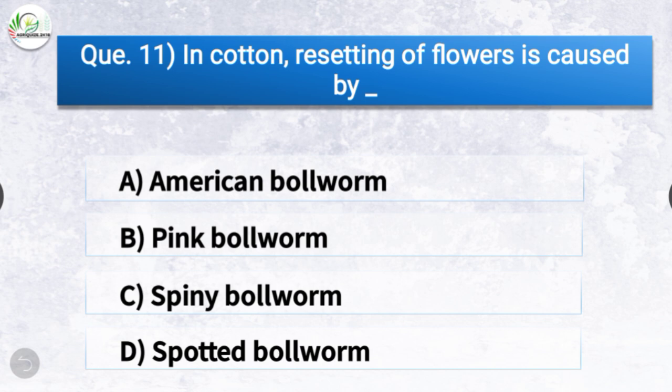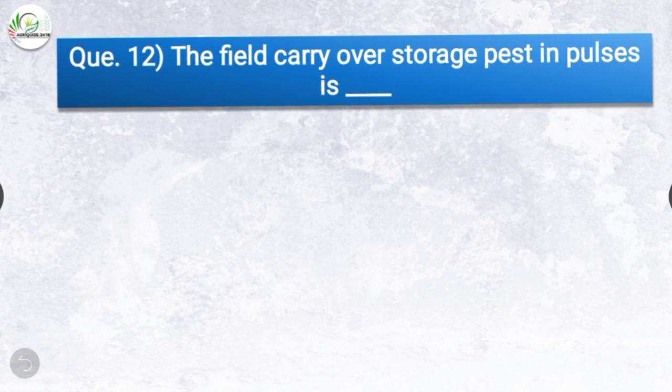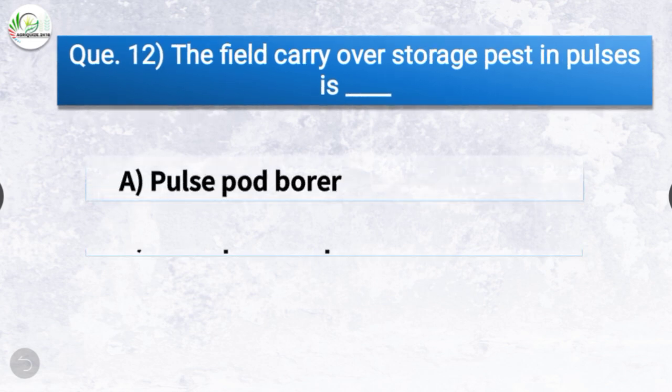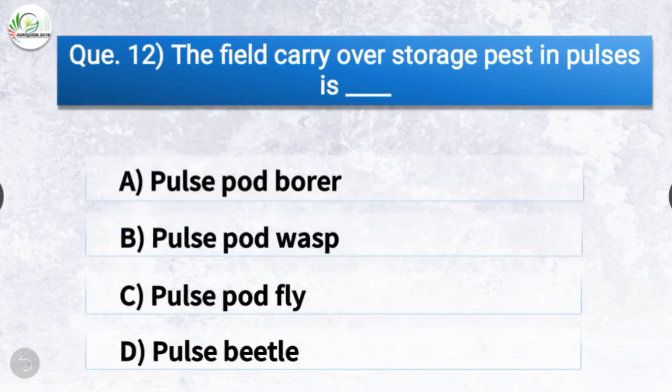Question number eleven: In cotton, rosetting of flowers is caused by dash. The options are American bollworm, pink bollworm, spiny bollworm, or spotted bollworm. The correct answer is option B, pink bollworm — in cotton, the rosetting of flowers is caused by pink bollworm.